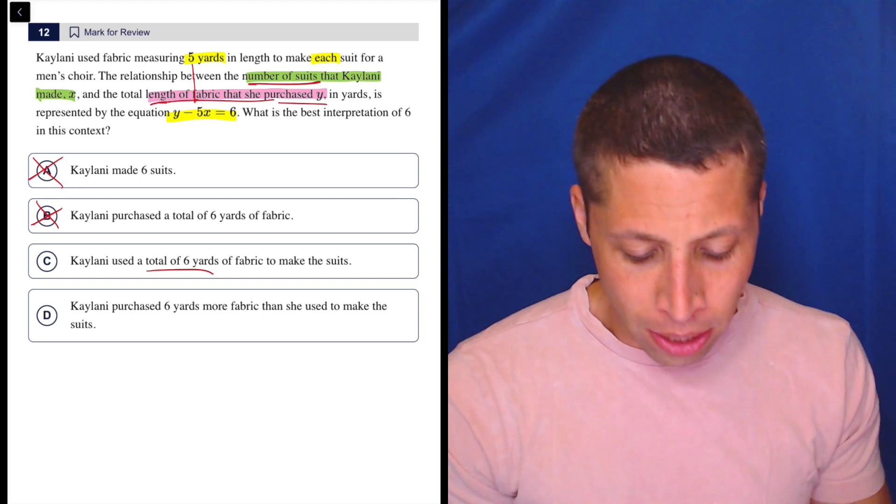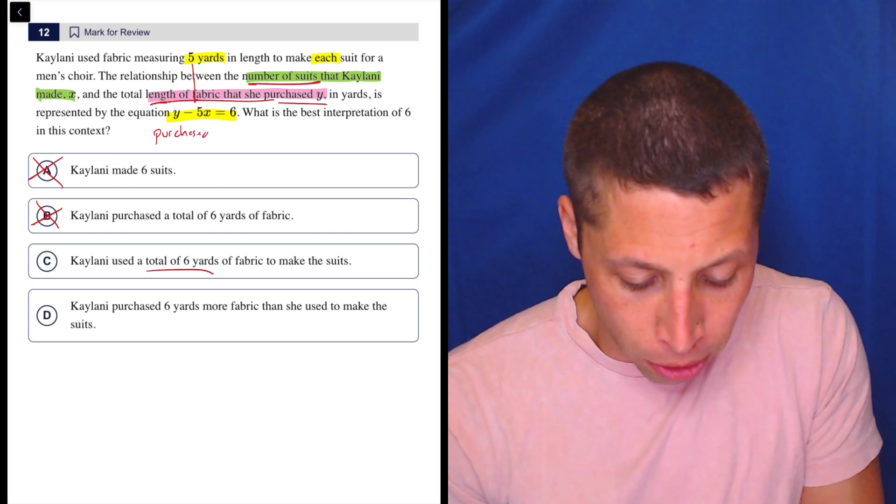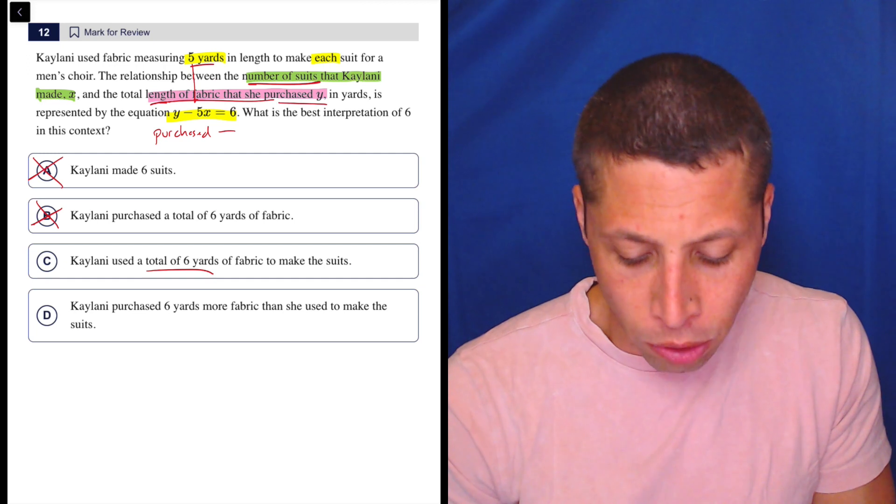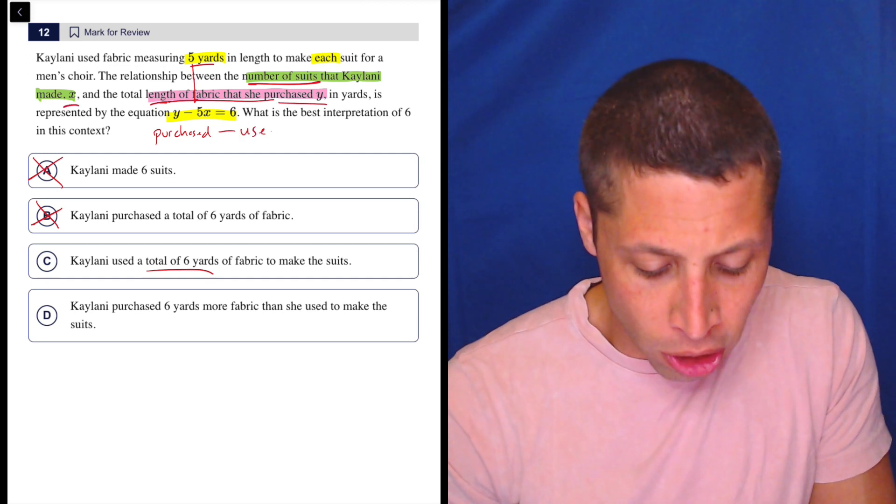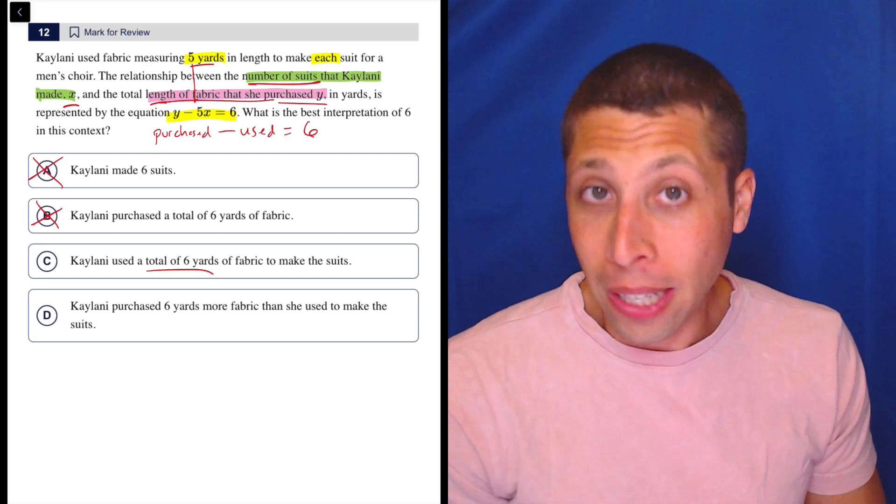Let's think about that. This is the amount she purchased. You take the amount she purchased, you subtract out the amount that she used, which is five yards for each suit. That's how much she used and what's left is six.